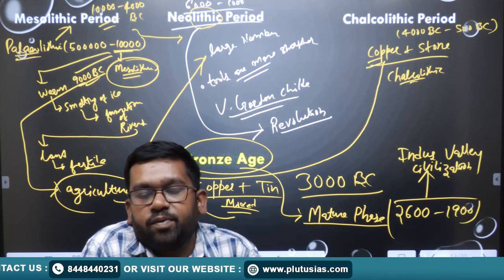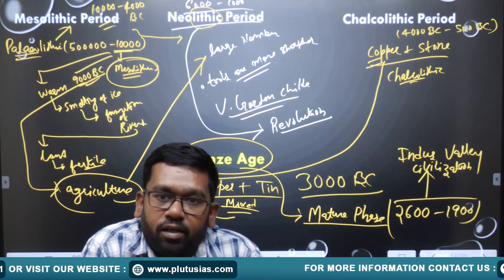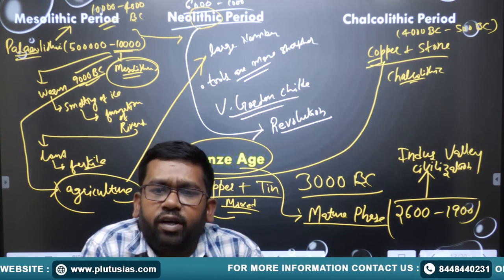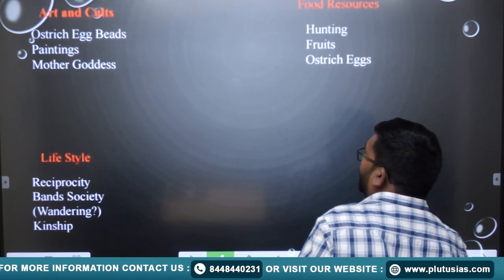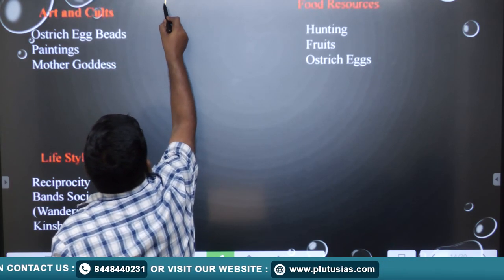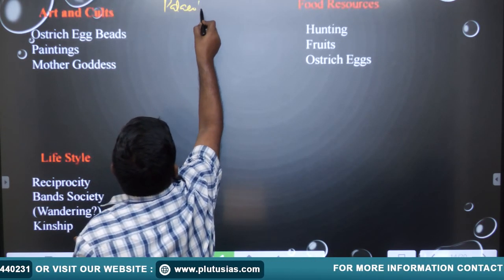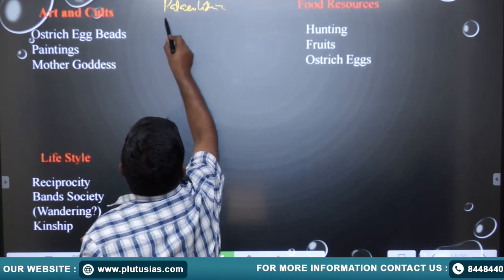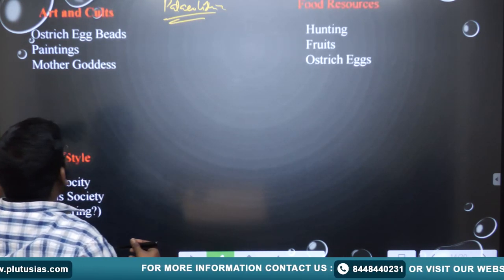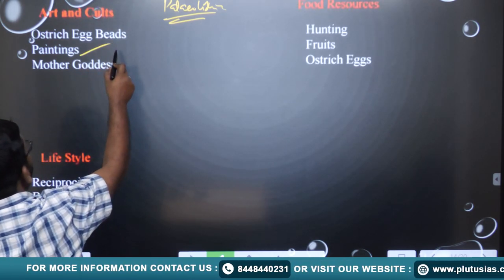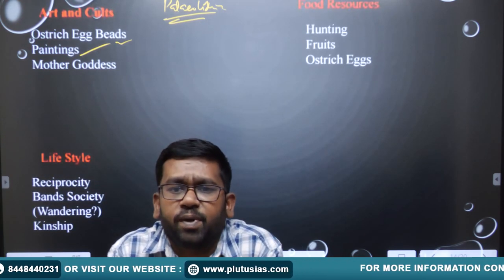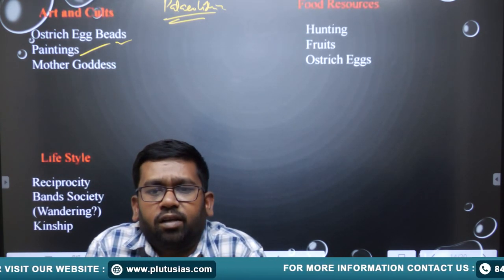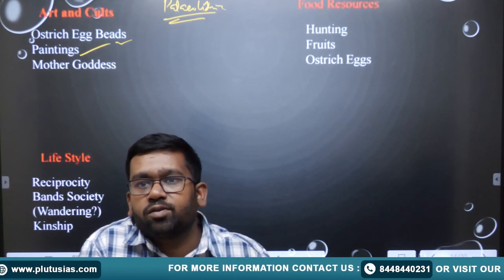Looking at the culture of these people during the Paleolithic period — their society was very different. It was based on a reciprocity system; they were a band society. They had their own beliefs, their art was important, and their lifestyle including hunting and food gathering was central to their existence.